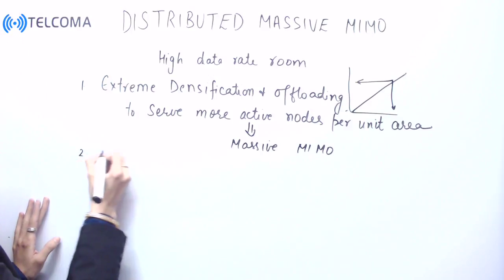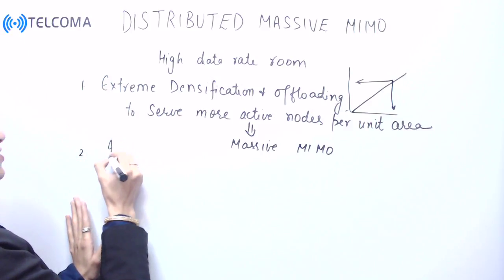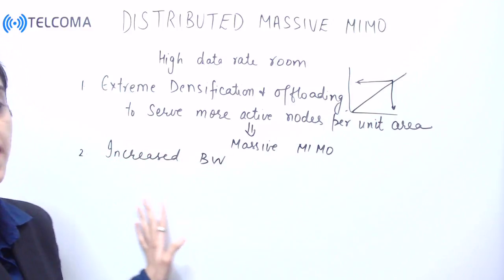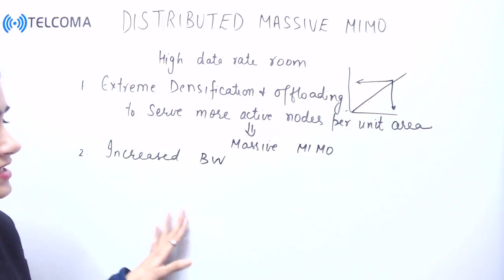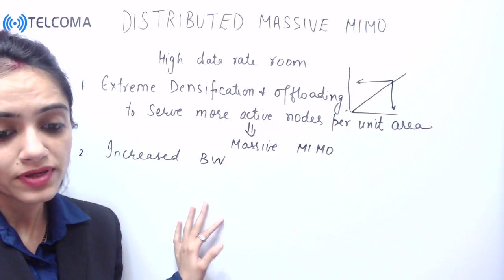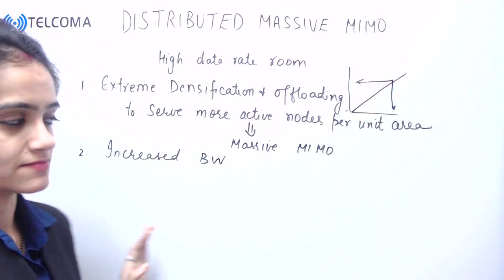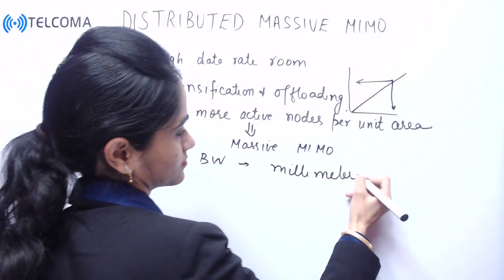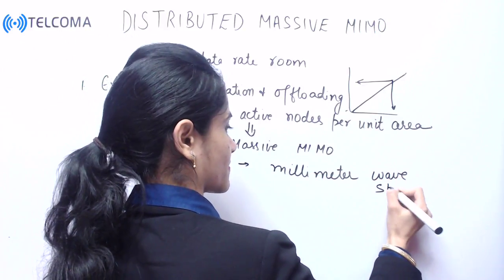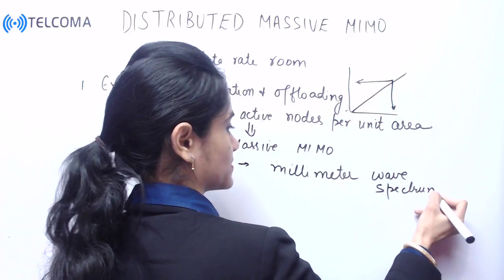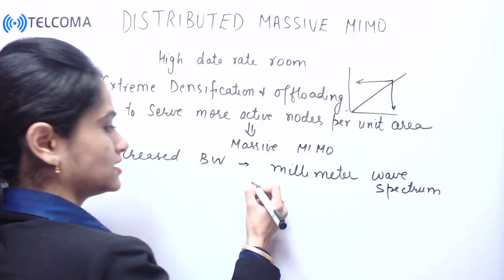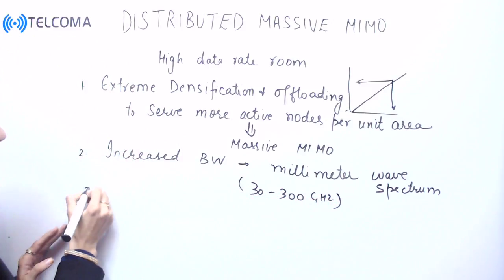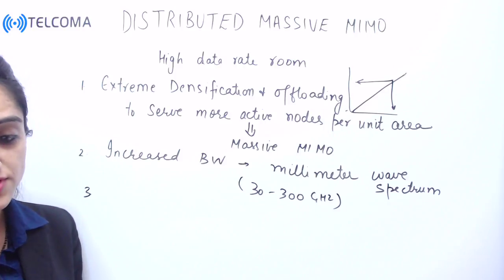The next symbiotic technique is increased bandwidth. We can increase bandwidth primarily by moving into the millimeter wave spectrum, which ranges from 30 to 300 gigahertz.